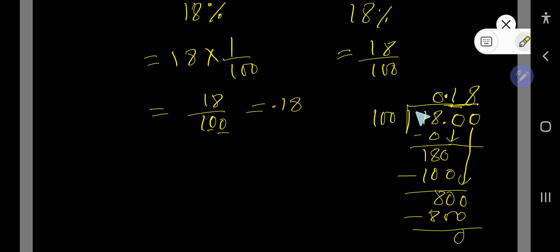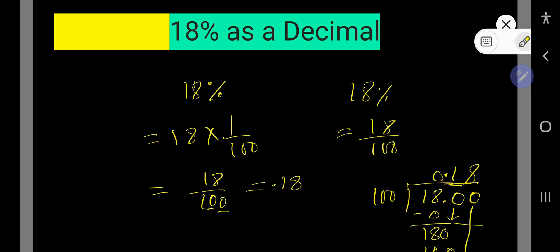0.18 is the answer. That is, 18% equals 0.18. I think you have understood these two methods. So thank you for viewing this video.